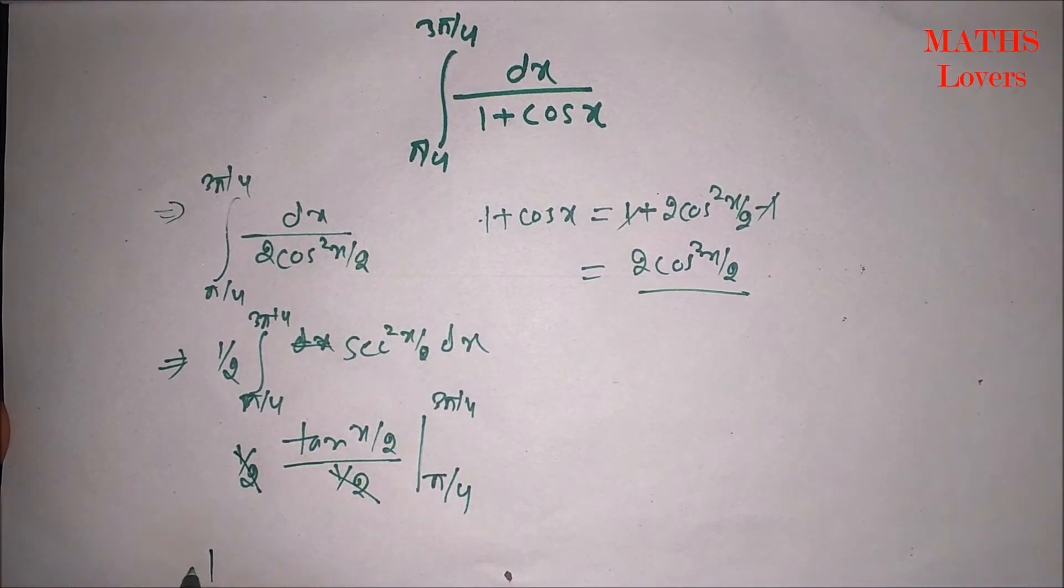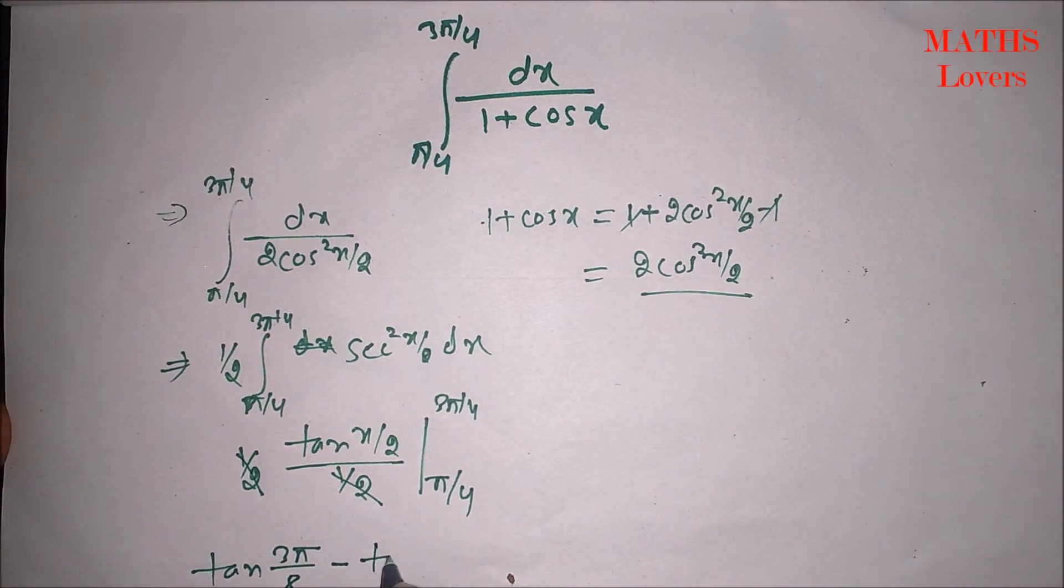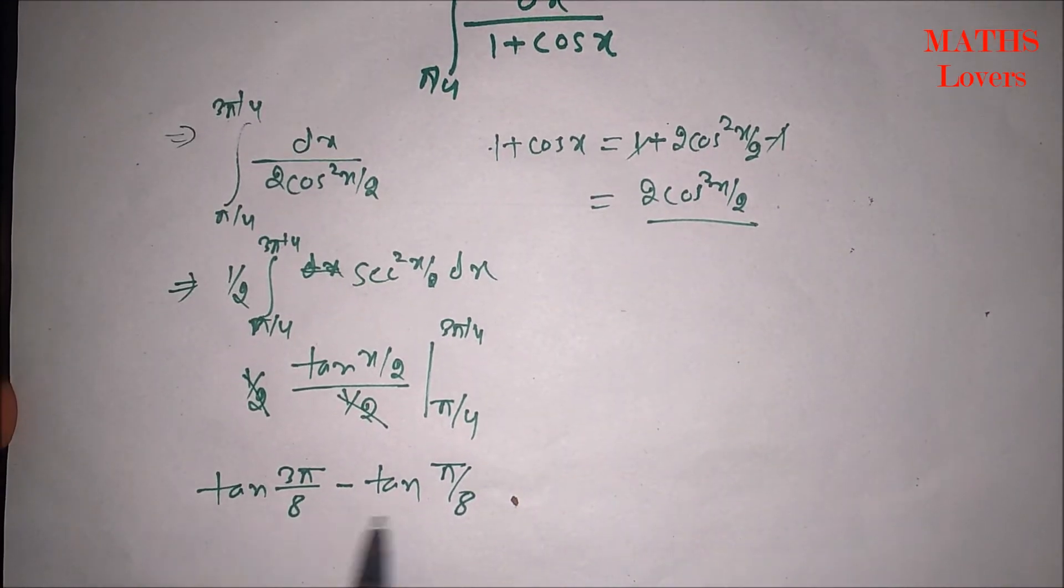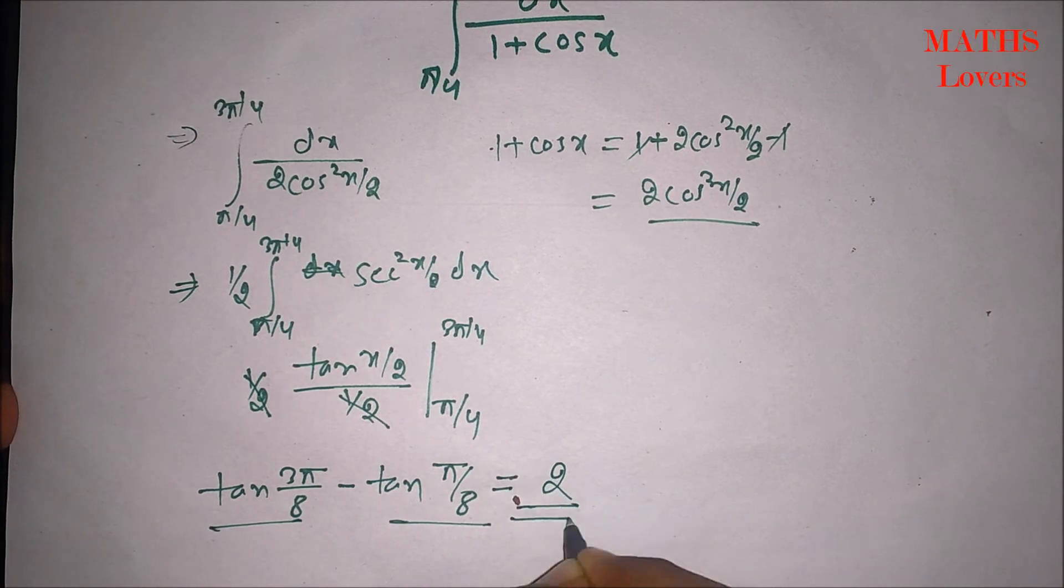So, if we put 3 pi by 4, then it will be tan 3 pi by 8 minus tan pi by 8. If you know the value of these two, then it will be simpler to you and you can write it as 2.